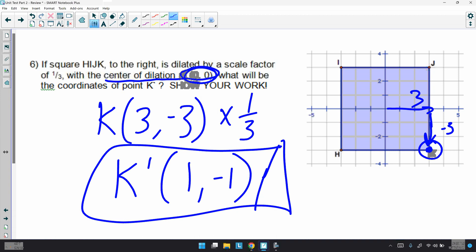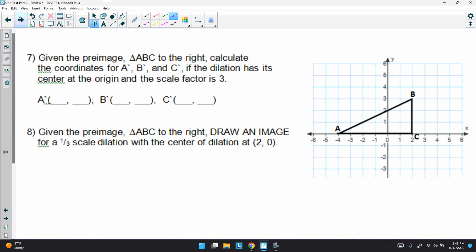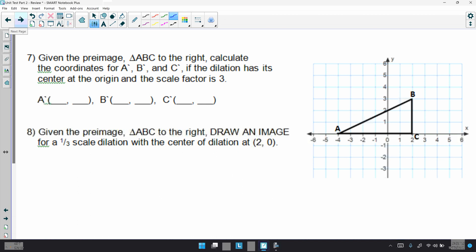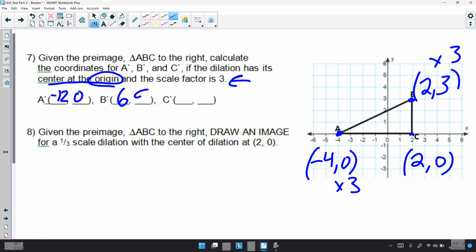Given the pre-image, triangle ABC, to the right, calculate the coordinates of A prime, B prime, C prime. If the dilation has its center at the origin and the scale factor is 3. So, coordinates for A is going to be negative 4, 0. Coordinates for C is going to be 2, 0. And coordinates for B is going to be 2, 3. Just like before, if the center dilation is around the origin, you just need to multiply by the scale factor. So, negative 4 times 3 is negative 12. And then, anything times 0 is just going to be 0. Let's see here. B, we'll use B next. Again, times all that by 3. So, 2 times 3 is 6. 3 times 3 is 9. And then, we go down to C. Again, times 3. 2 times 3 is 6. And then, 0 because anything times 0 is 0.